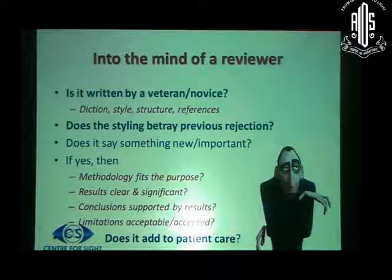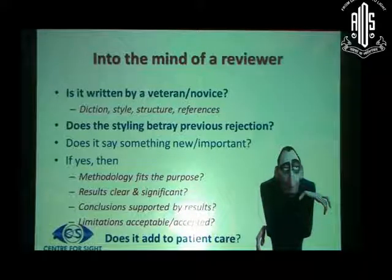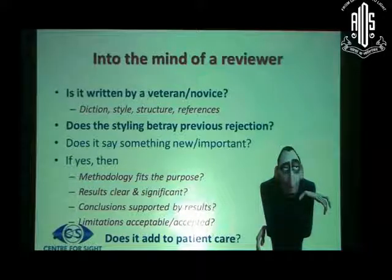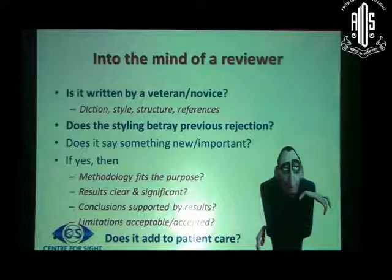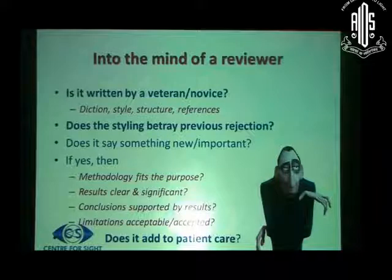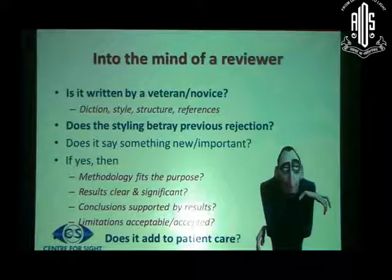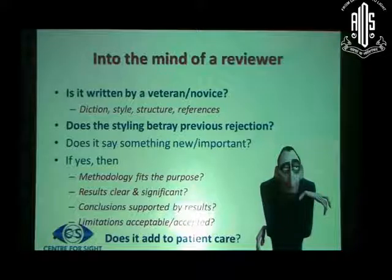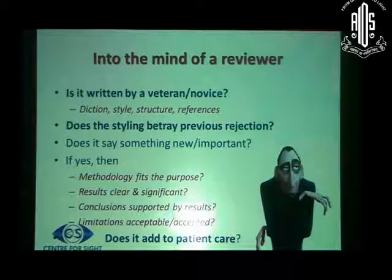We should put ourselves in the shoes of the reviewer as well. Reviewers generally see whether a paper is written by a first-timer or an experienced author. They look at the diction, the style, the structure, the compliance of references with the journal style, and also whether the styling betrays a previous rejection. One obviously tries to see whether the paper says something new or important, and if it does, whether the methodology fits the purpose, whether the results are clear and significant, whether the conclusions support the results, and whether the limitations are acceptable.